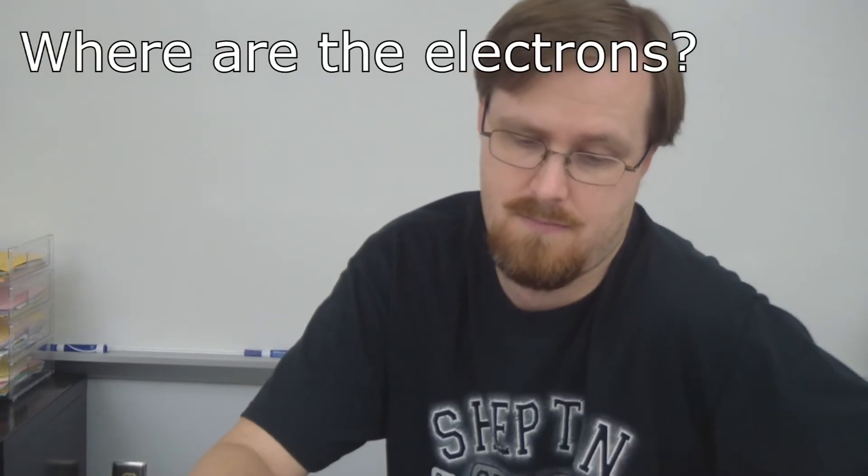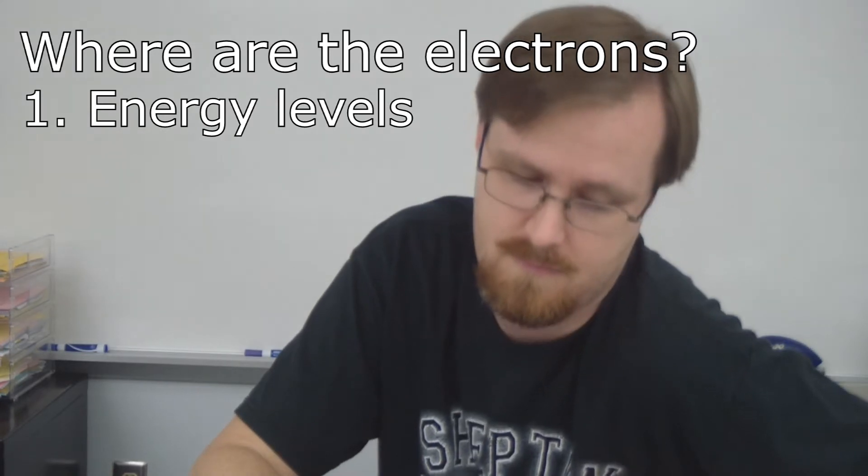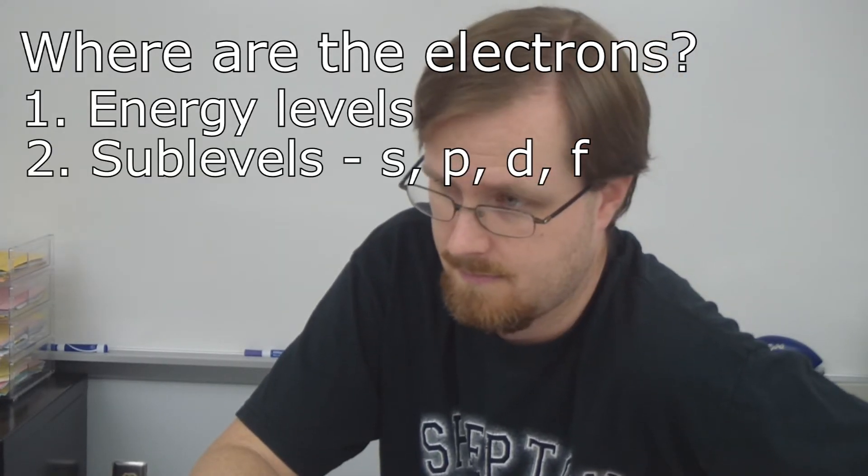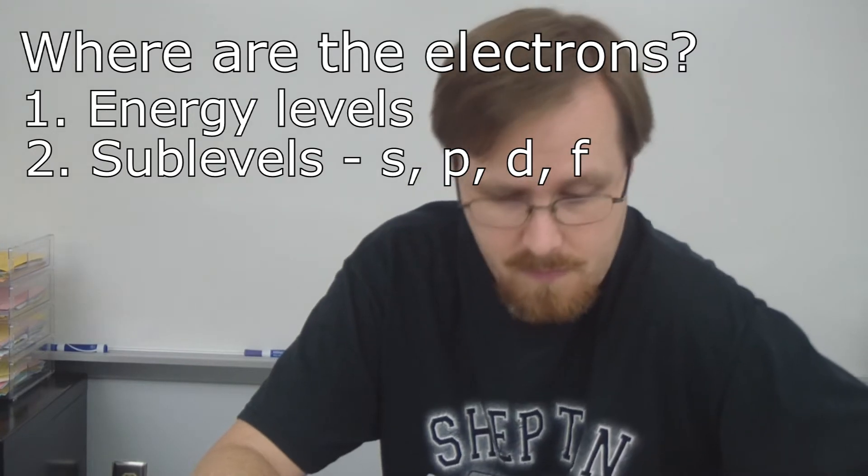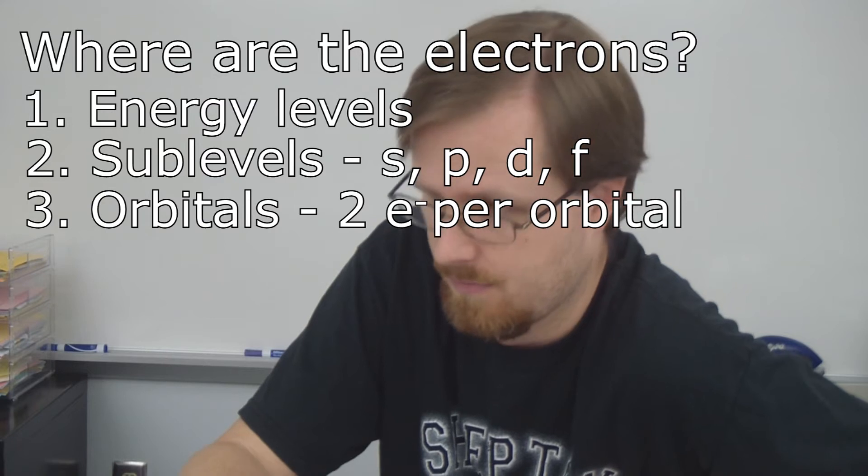You need to say that electron configuration is like asking, where are the electrons? Obviously, they are in the energy levels, but then each energy level is broken down into four sublevels called S, P, D, and F. And each sublevel is made up of orbitals which can hold up to two electrons per orbital.